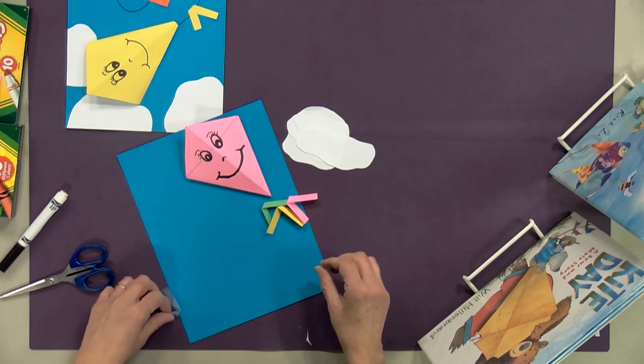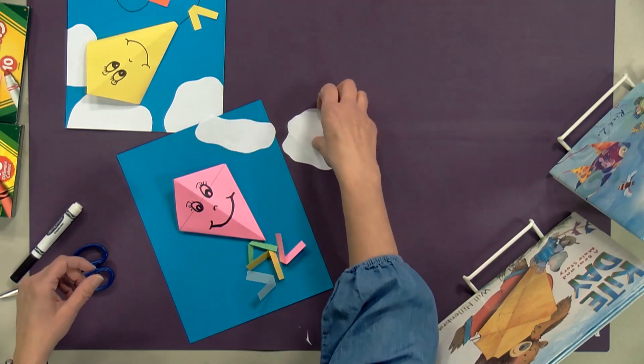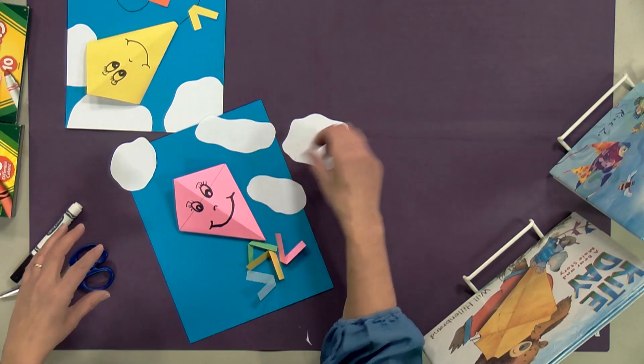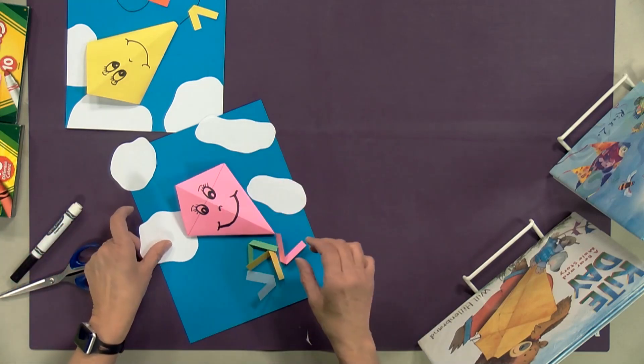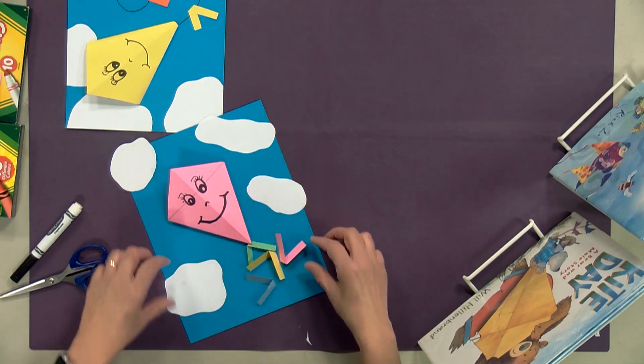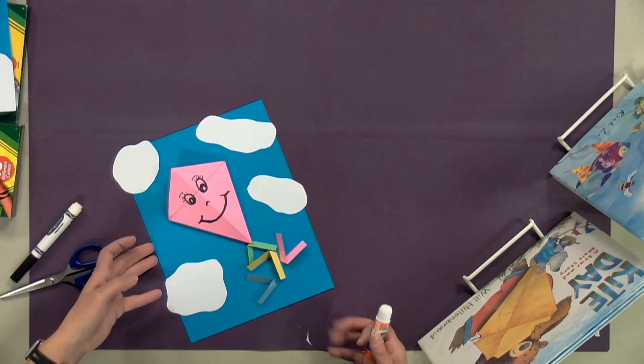Now before you do any gluing, you want to place all this on your paper here. Where do I want to put stuff? I can even glue it so that it's sort of coming off the page a little bit, and that would probably be pretty good. Maybe I have a cloud down here if my kite's way up in the sky.